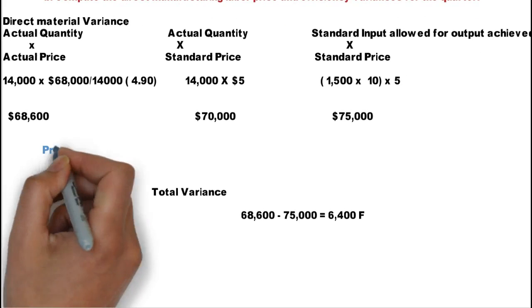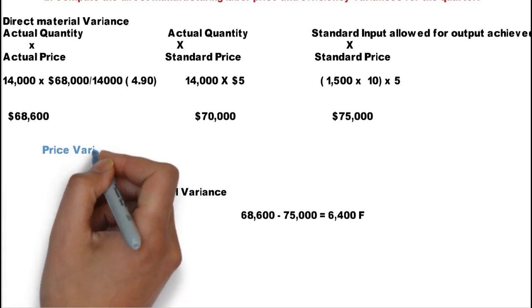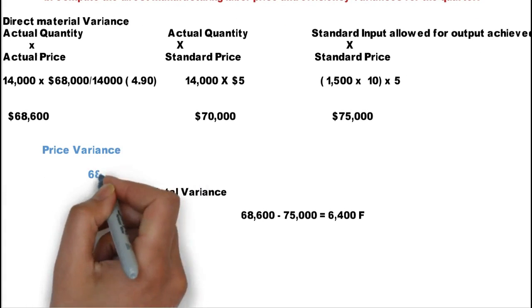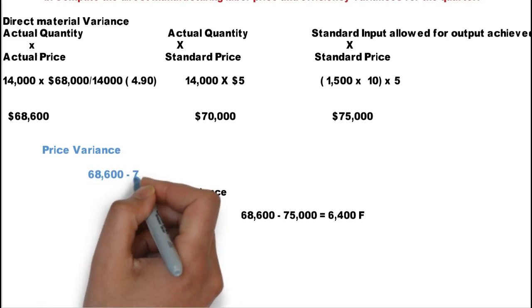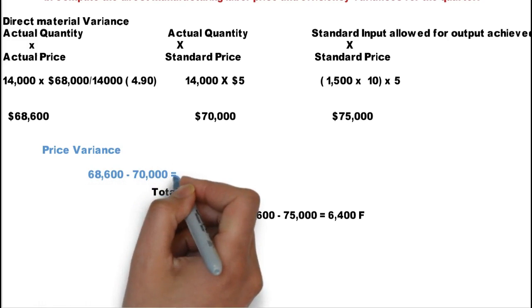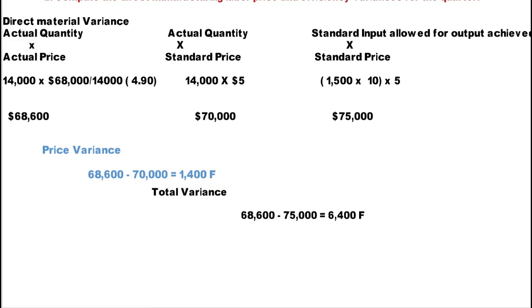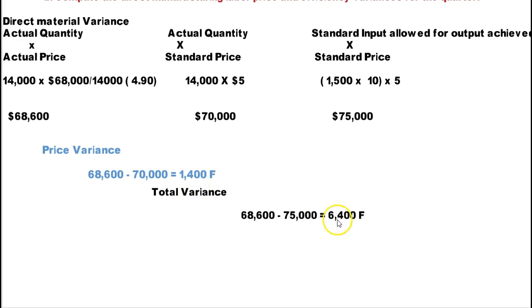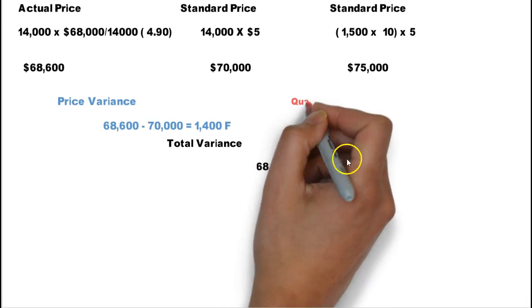If left is greater than right, it's unfavorable. Now that $6,400 favorable is a function of both price variance and quantity variance. And the price variance is the difference between $68,600 and $70,000, which is $1,400. So it explains $1,400 of that $6,400.